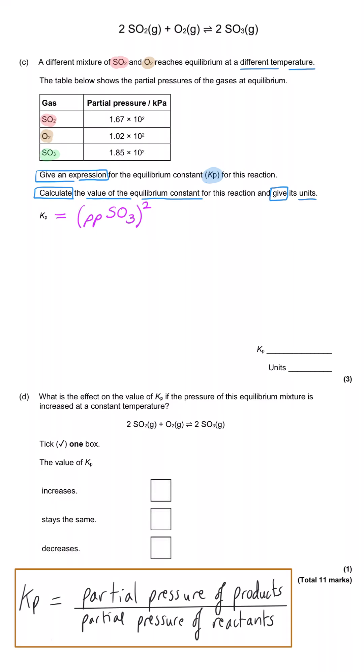And then we put the reactants on the bottom, and so the reactants are the SO2 and the O2, so we put the partial pressures of each of those. And since the coefficient for SO2 is also a 2, this value needs to be squared as well. So then that's the expression, that's the first mark.